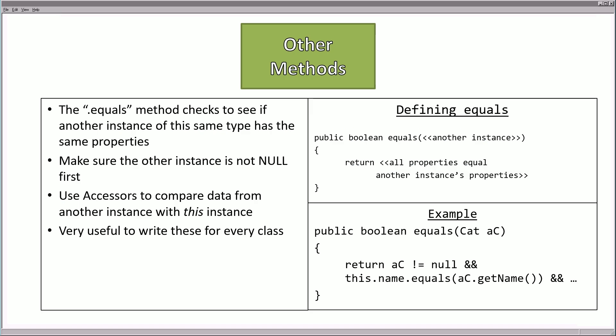Now we get to some of the other methods. There are two other methods I highly recommend always writing when defining a class. The first is the equals method, which checks if another instance of the same type has the exact same properties — similar to the String equals method. The formula: public boolean equals, with a parameter that is another instance of the class. One of the first checks should be whether that other instance is not null — if it doesn't exist, of course it's not equal, and this avoids a runtime error.